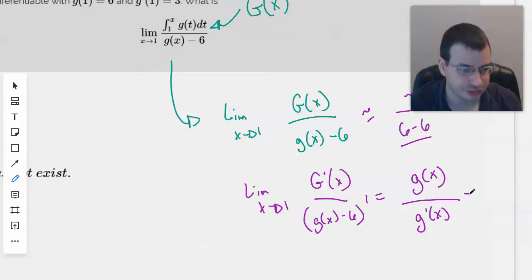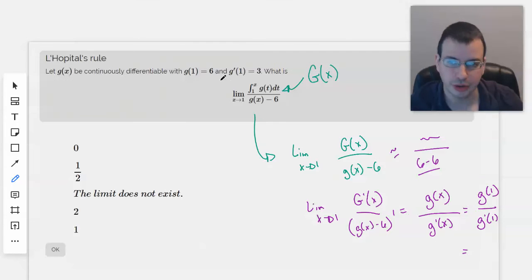Which will be g of 1 over g prime of 1, which will equal g of 1 is 6, g prime of 1 is 3, and so this will equal 2.